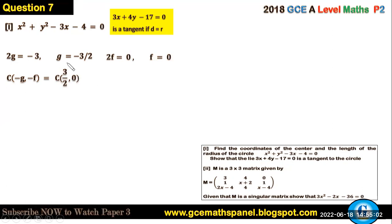Therefore, the center of this circle is negative g, negative f, which will be 3 over 2, 0. Now for the radius, the radius is given by the square root of g squared plus f squared minus c.